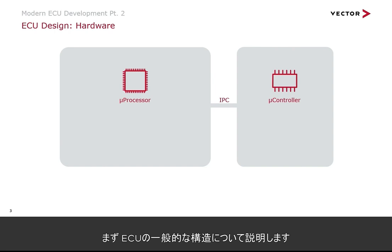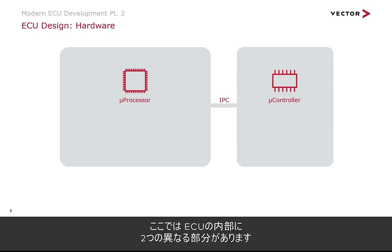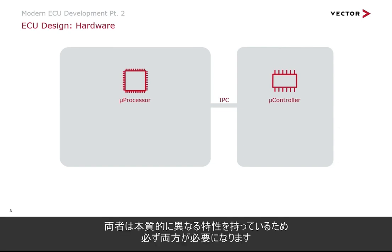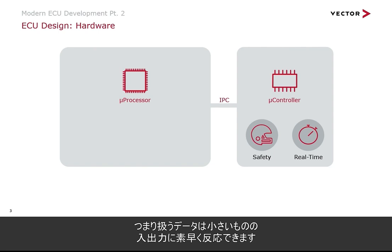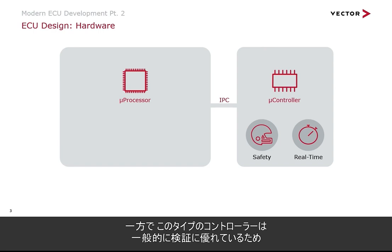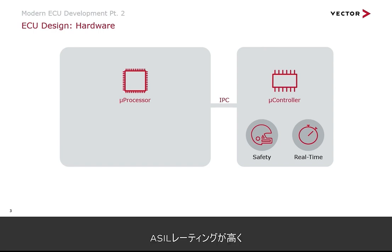The question is: how do you build such an ECU that leverages all these benefits? Let's start with the general architecture. Inside these ECUs there are two different parts: a microcontroller side and a microprocessor side. You always need both because they have inherently different properties. The microcontroller is typically less powerful but has much better real-time performance — a much smaller jitter and faster reaction to inputs and outputs. These controllers are also easier to verify and therefore have a higher ASIL rating, making it much easier to place safety-related software on them.